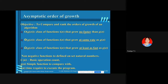Big O is used when the order of growth of T(N) is smaller compared to G(N). Theta of G(N) is used when it is the same order of growth. And Omega of G(N) is used when the order of growth of T(N) is larger compared to G(N), so you say T(N) belongs to Omega of G(N).